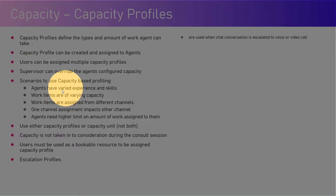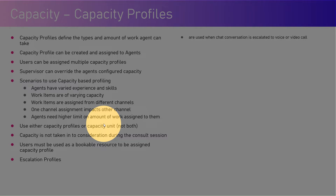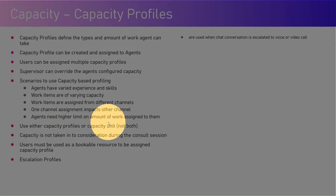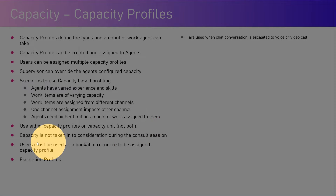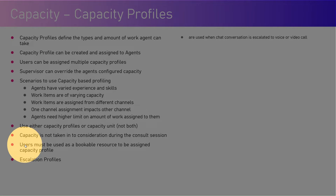There are two types of profiling: capacity-based profiling and capacity unit. You can't use both — you have to use one. Capacity is not taken into consideration during the consultation session. Users must be used as a bookable resource to be assigned a capacity profile — any user marked as a bookable resource will have the capacity profile assigned.